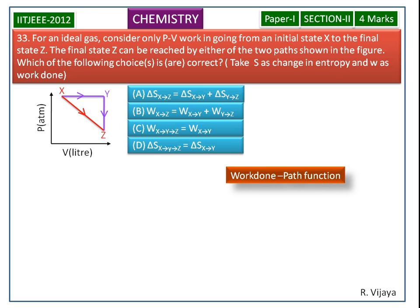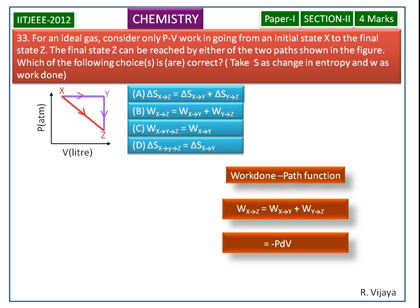First we consider work done. Work done is the path function. The work done in X to Z path is equal to sum of the work done in X, Y path and Y, Z path. Now we substitute these two work done values.